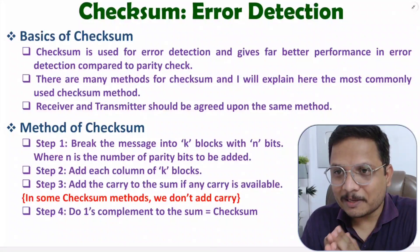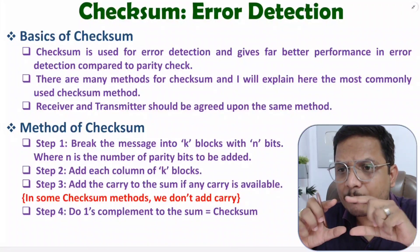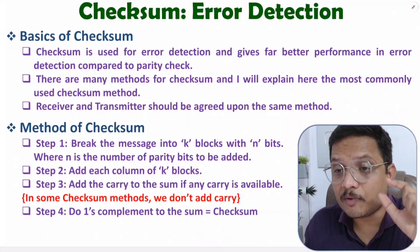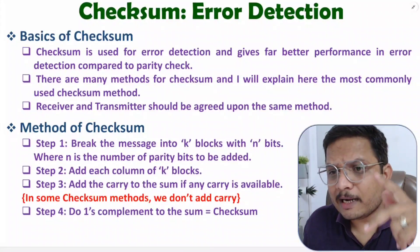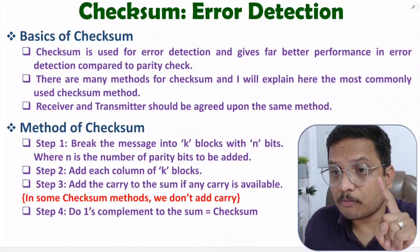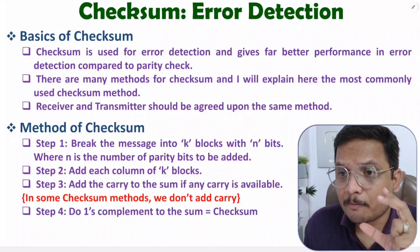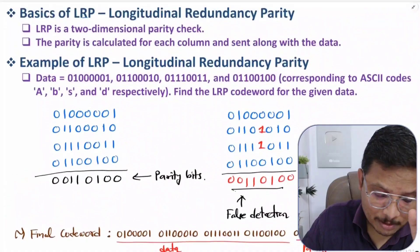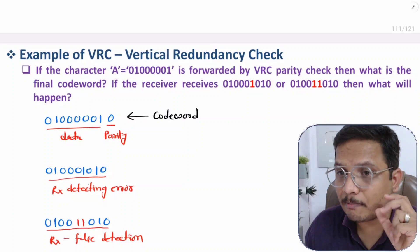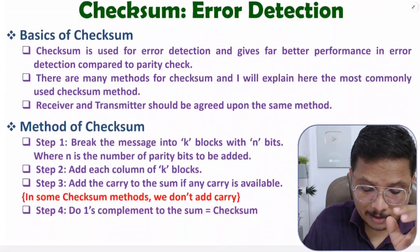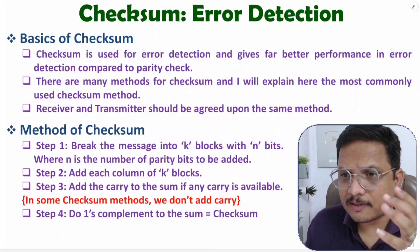Hello friends, welcome to Engineering Funda. In this video I'm going to explain checksum, which we use for error detection. You will observe that in computer networks, for each and every frame transmission we use checksum, so checksum is widely used inside computer networks. There are varieties of methods — I'll explain the one most commonly used. The reason we use checksum is it gives way better performance compared to the parity method.